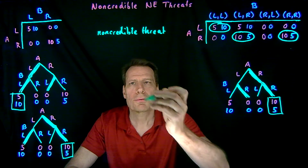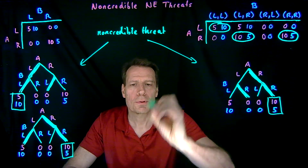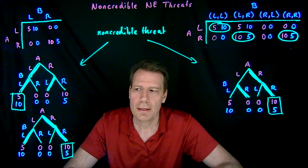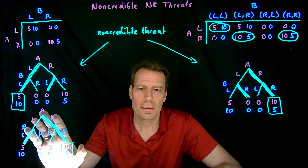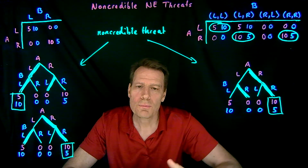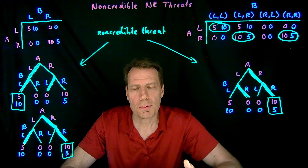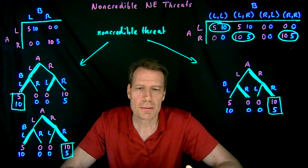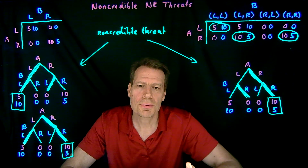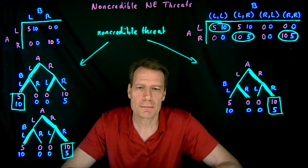So we have two Nash equilibria involving non-credible threats and one where there is no non-credible threat. This raises the question: should we pay attention to Nash equilibria where players respond to non-credible threats, or should we focus only on equilibria that don't include non-credible threats?